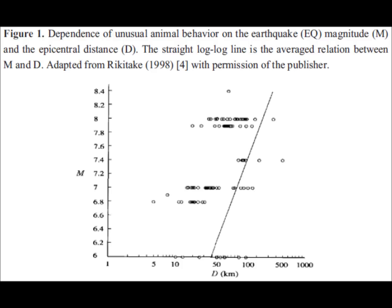The kilometers are also plotted in logarithmic fashion. On the left you see 1, about halfway down you see 50, and at the very end you see 1,000 — so it's not going up linearly. The circles represent unusual animal behavior before an earthquake, plotted by magnitude and distance from the epicenter. What you can see is that as the magnitude of the earthquake increases, so does the distance of the unusual animal behavior, on average.